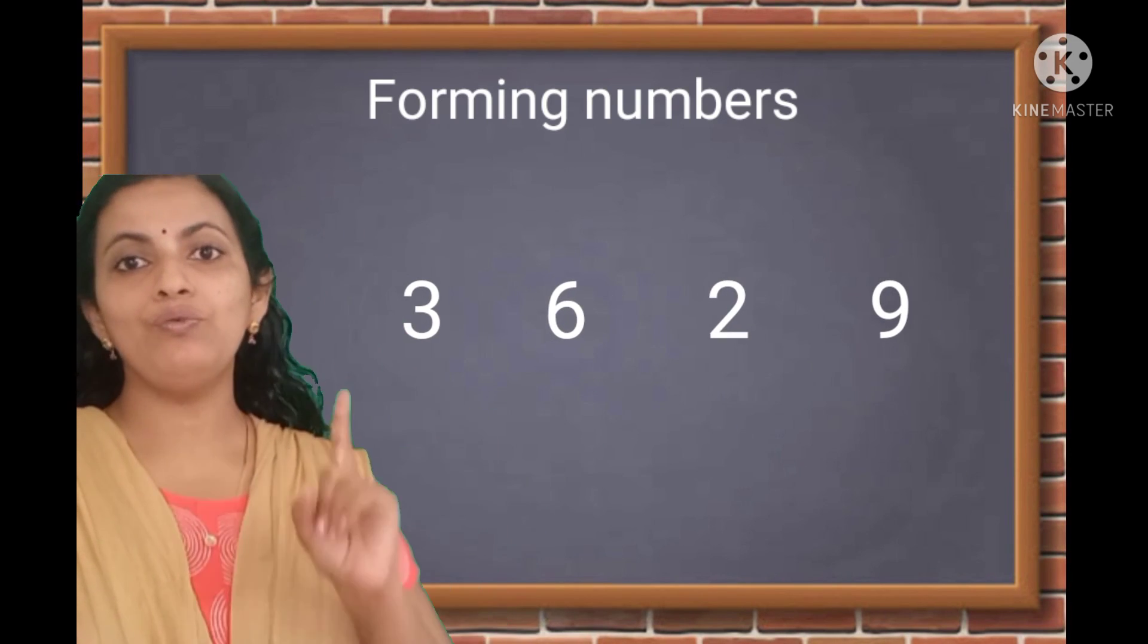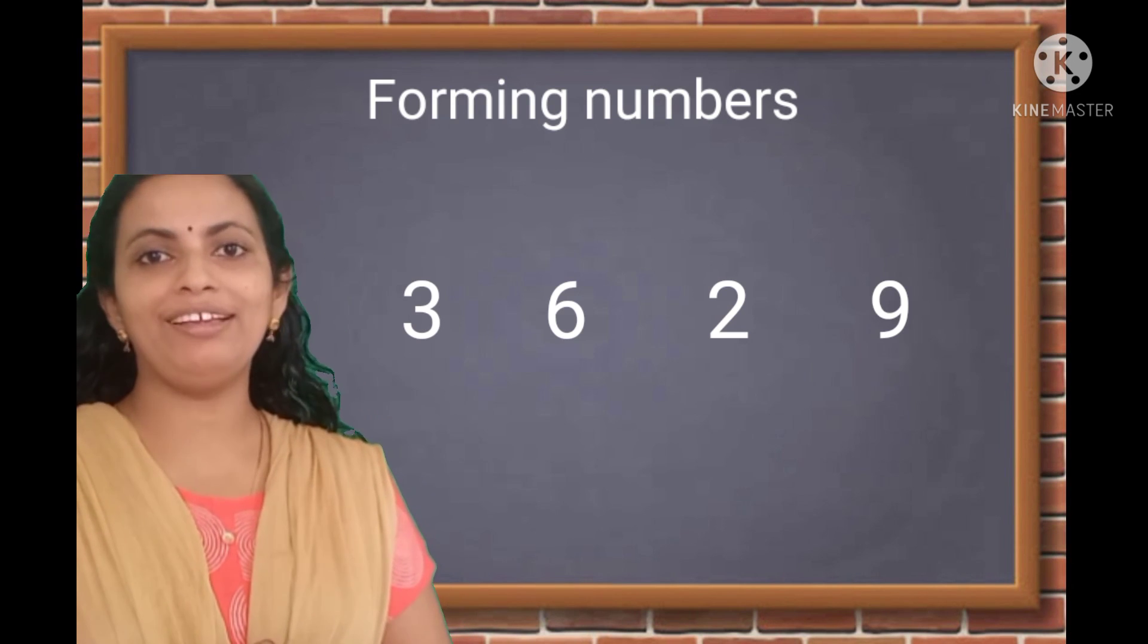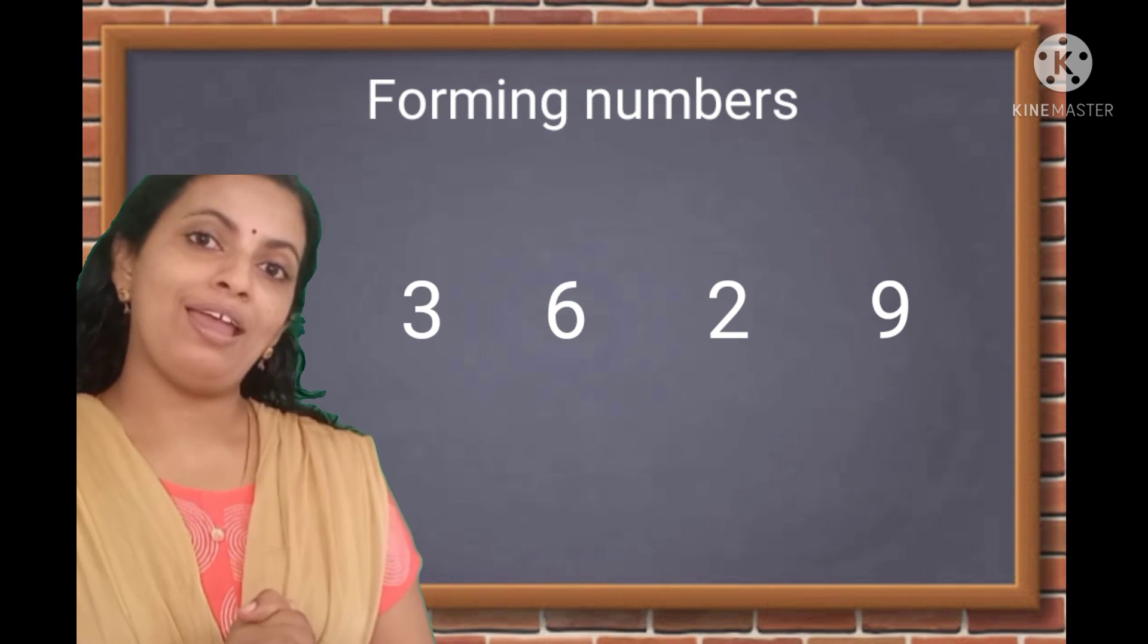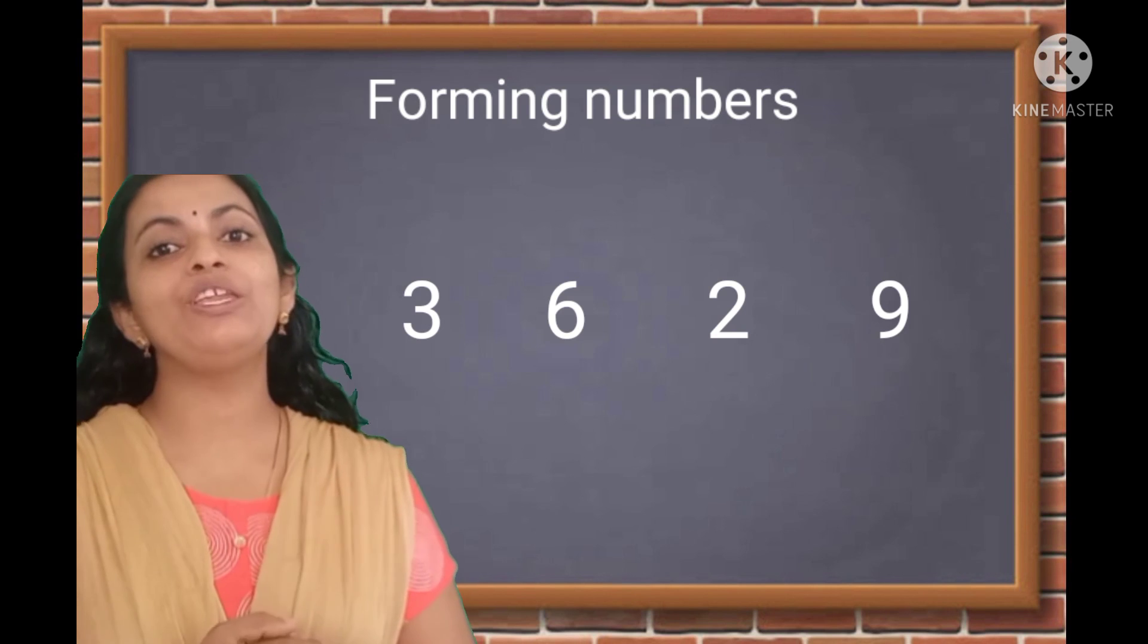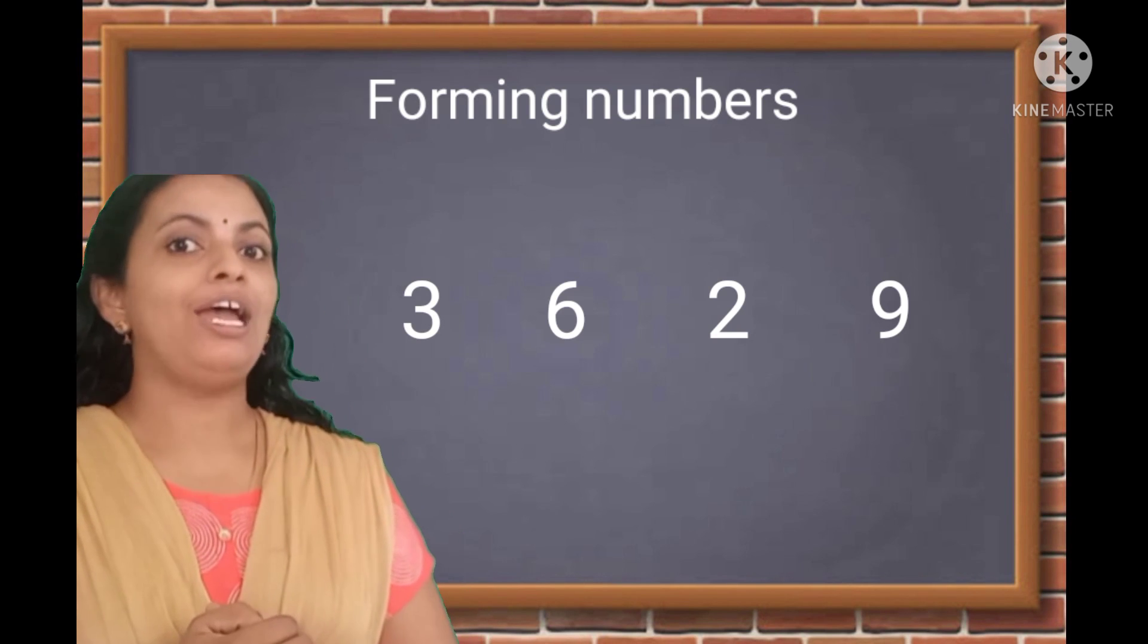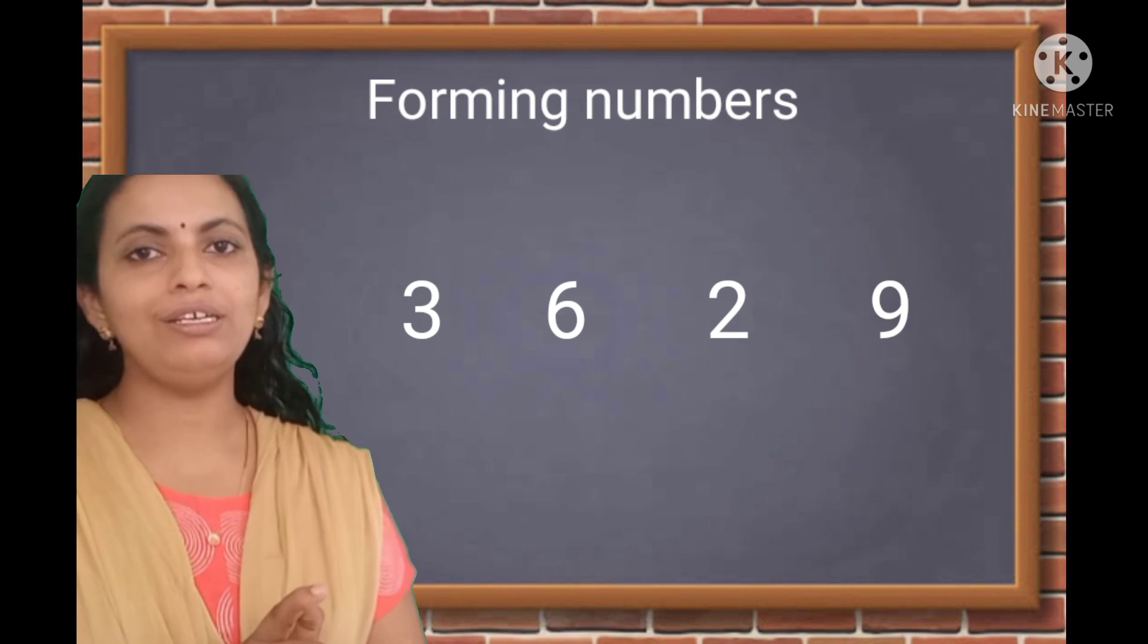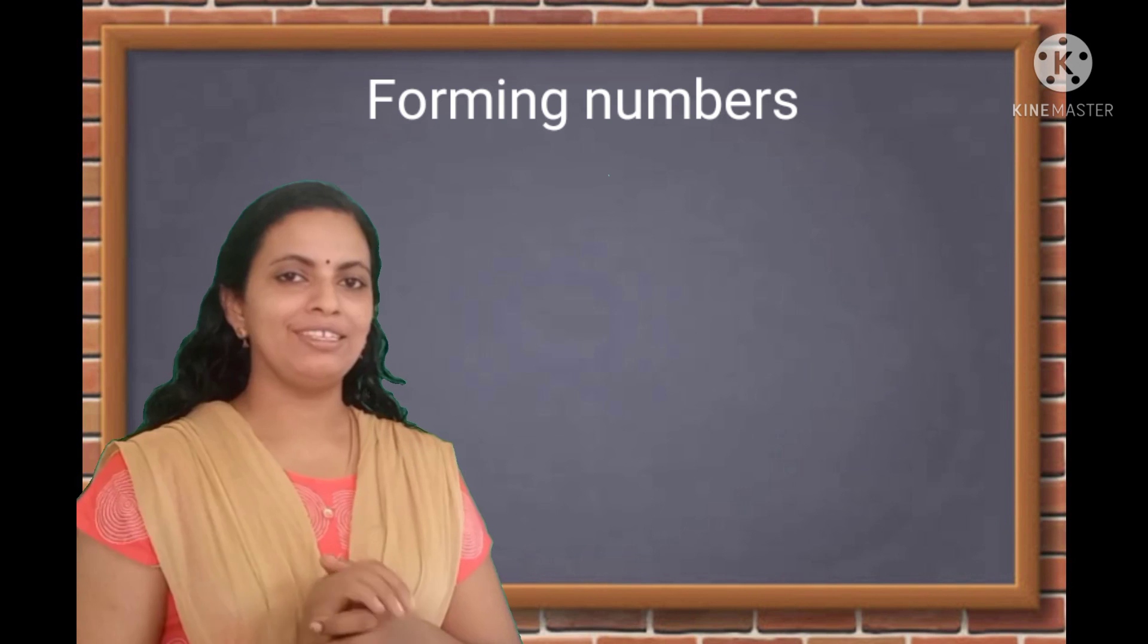I am giving you four different digits. Using that, you have to make all the possible numbers. And tell me how many numbers you can form? Yes, 24 numbers you can form. And also write the biggest four digit number and the smallest four digit number. Bye!